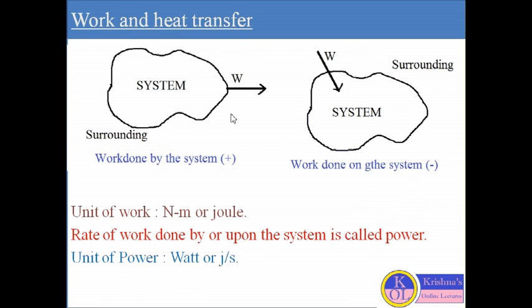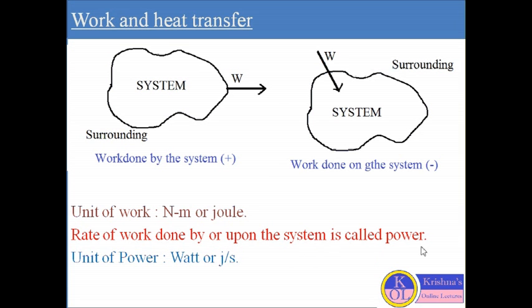The very important thing you should know is the sign convention for work done. This diagram shows the sign convention. We are considering a system and beyond the system there is a surrounding. If there is work done by the system, that work done is considered as positive. If we are considering work done on the system, that work done is considered as negative. The unit of work done by or upon the system is generally called power.